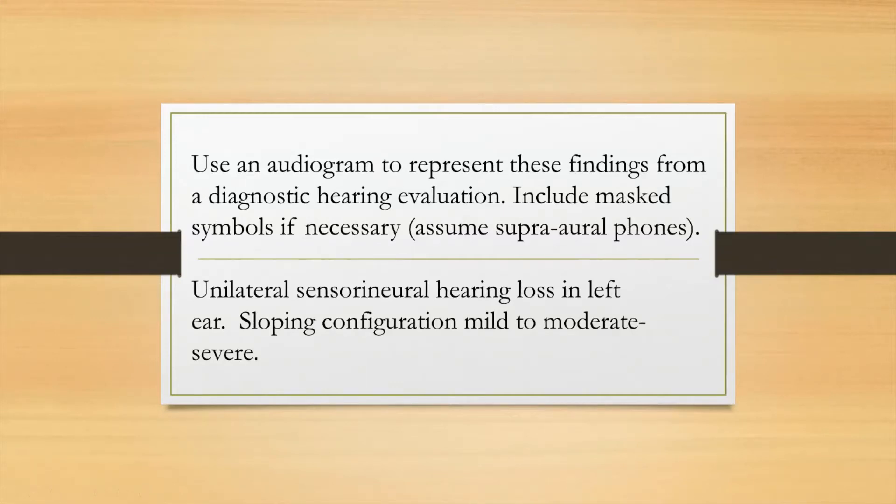Let's take a look at a problem. Use an audiogram to represent these findings from a diagnostic hearing evaluation. Include masked symbols if necessary. Assume supraoral phones. And here is our case. It is a unilateral sensory neural hearing loss in the left ear. Sloping configuration mild to moderately severe.